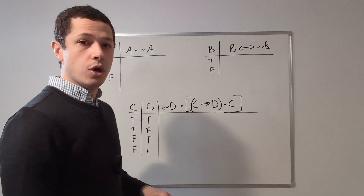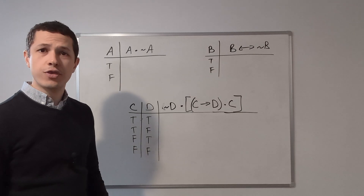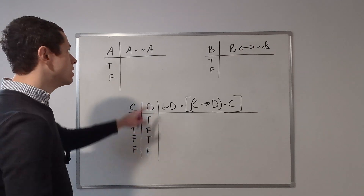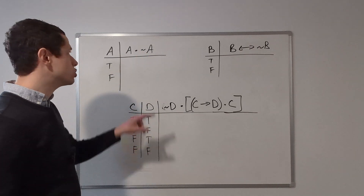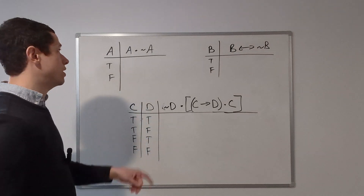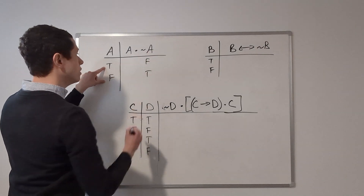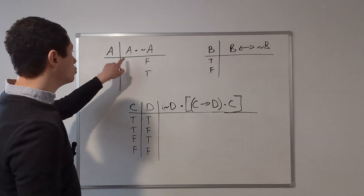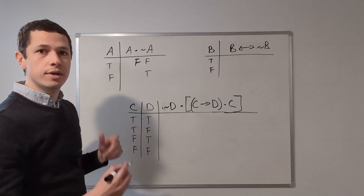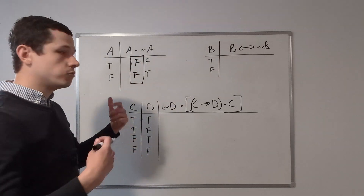We'll start with the most straightforward contradiction: A and not A — a thing both is and is not. Our truth table will show this is the case. We start by evaluating not A. Conjunctions are true if and only if both conjuncts are true; otherwise they're false. Not A gives us: false, true. Now the conjunction: true and false — they're not both true, so this is false. False and true — they're not both true, so this is also false. We have ourselves a contradiction.